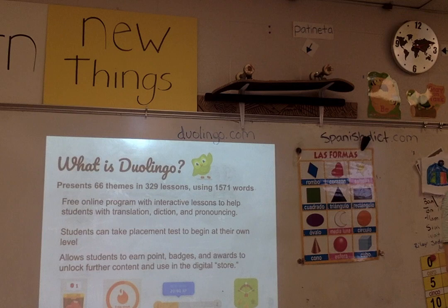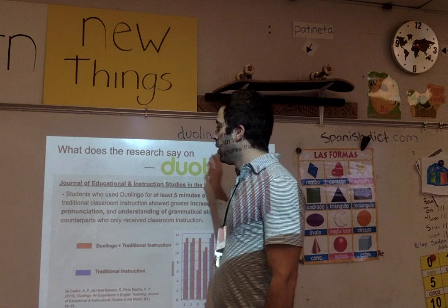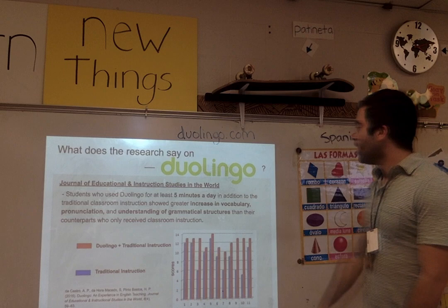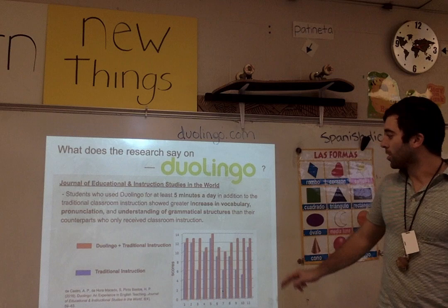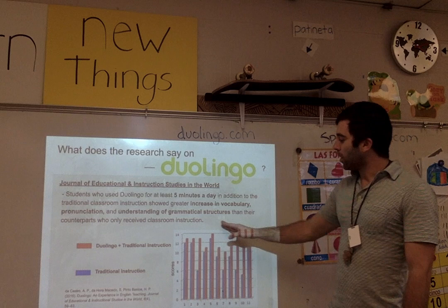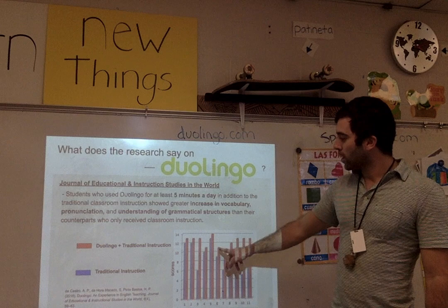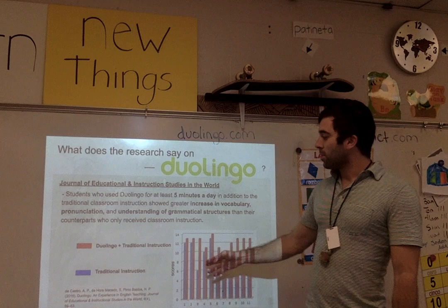What does the research say? The Journal of Educational and Instructional Studies in the World found that students who use Duolingo for at least five minutes a day in addition to traditional classroom instruction showed greater increases in vocabulary, pronunciation, and understanding of grammatical structures than counterparts who only received classroom instruction. Looking at this graph, red represents Duolingo plus traditional instruction and blue is just traditional instruction — showing that Duolingo enhanced learning and brought scores up higher.